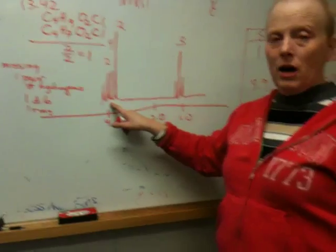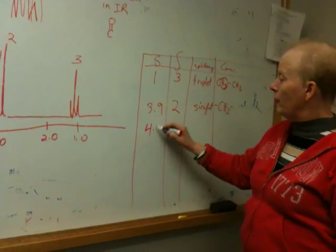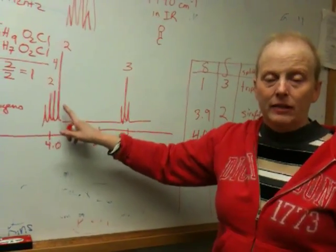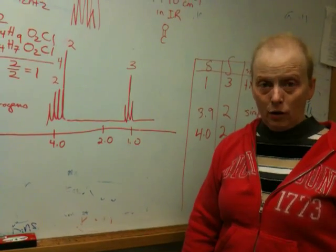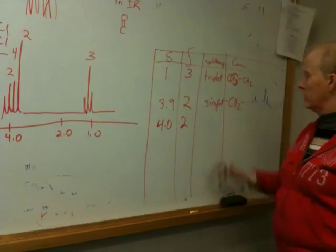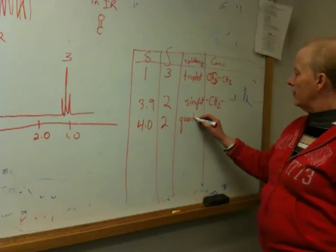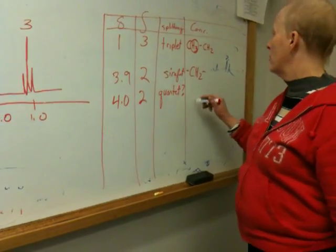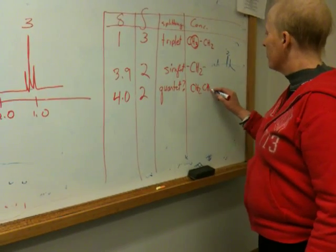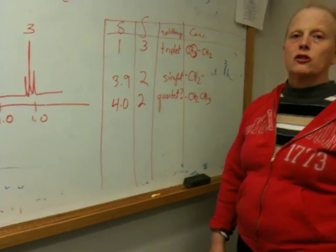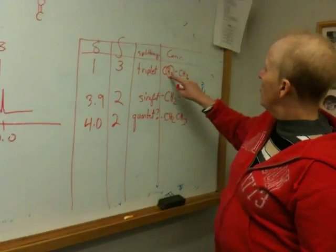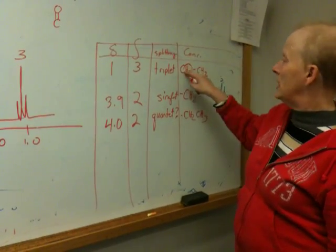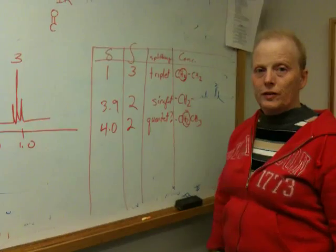At 4.0, I believe we have an area of two. And it looks like it's kind of like the back end of a triplet, of a quartet. It should be a quartet. So I'm going to say quartet, kind of like question mark. Well, how would you interpret that? That would be a CH2 next to a CH3. This is the beauty of NMR. You always get the information twice. So if we think this is here, this really has to be here. So this CH2 is this CH2. This CH3 is this CH3. So now you're finally observing the CH2.